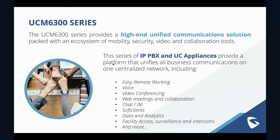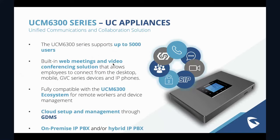The UCM 6300 series provides a high-end unified communication solution with tools that give you the ability to unify all your business communications onto one centralized network. The current UCM 6300 series supports up to 5,000 users and has built-in web meetings, including a built-in video conferencing and video meeting solution. I do want to point out that these devices don't have to be used with the ecosystem — many of you will continue to use them as a standard on-premise IP PBX, and that is exactly what they are designed to do.